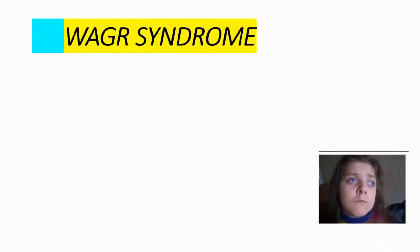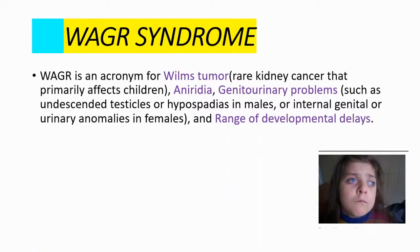I want to talk about a syndrome that includes aniridia, which is WAGR syndrome. WAGR is an acronym for Wilms tumor — a rare kidney cancer that primarily affects children — aniridia, which is the topic of today, and genitourinary problems. These can include undescended testicles or hypospadias in males, or internal genital or urinary anomalies in females.